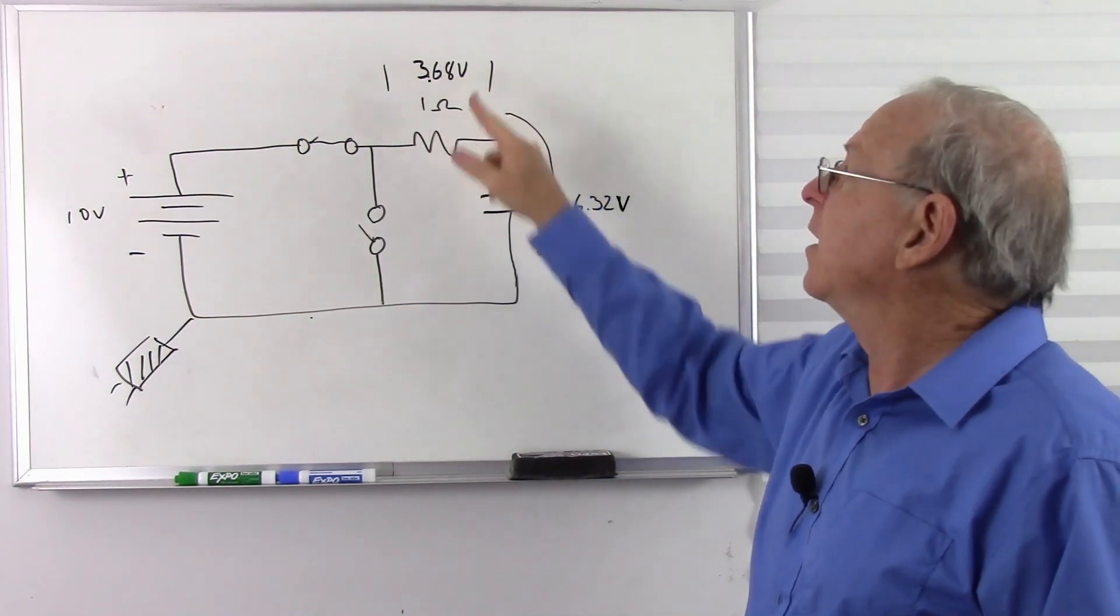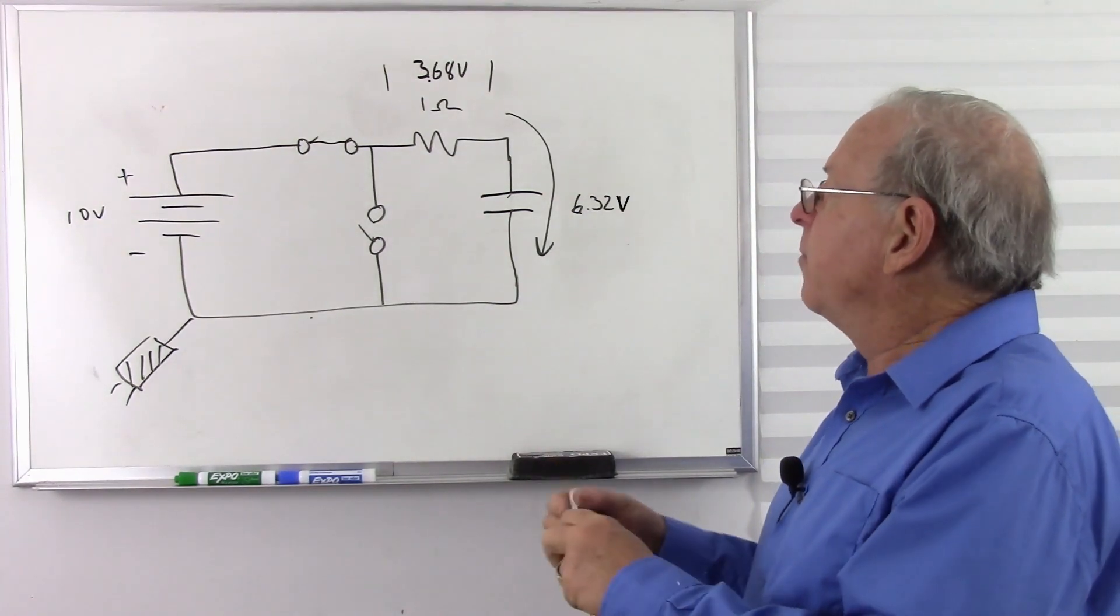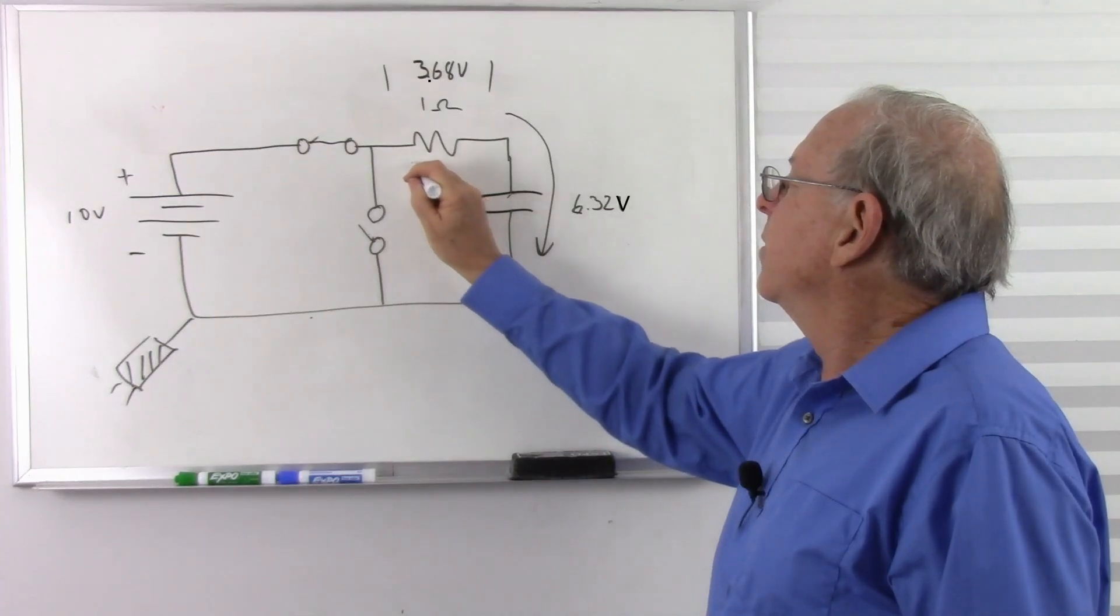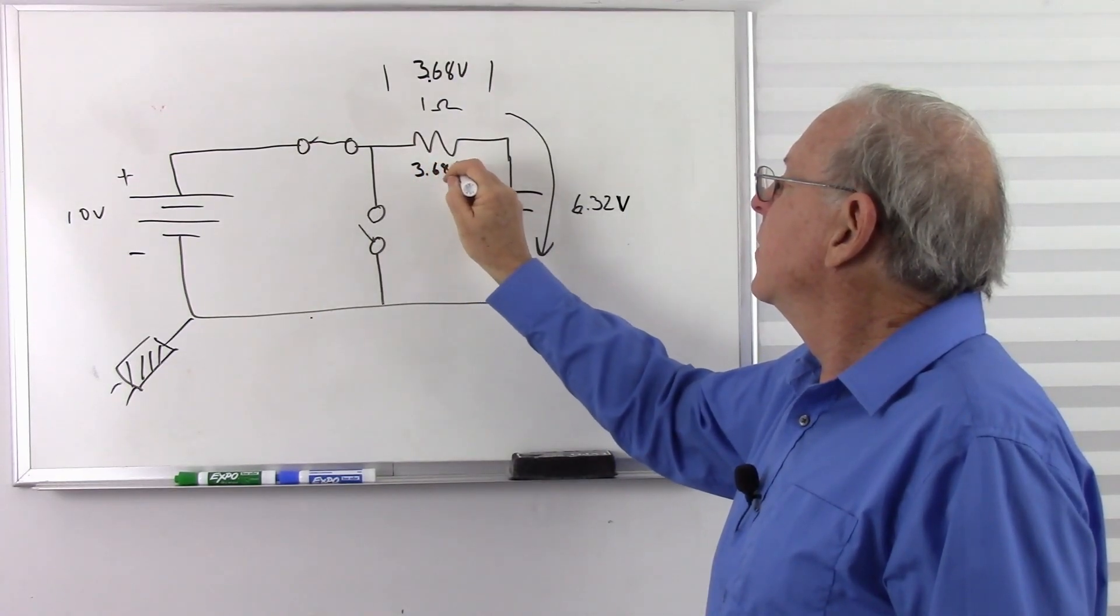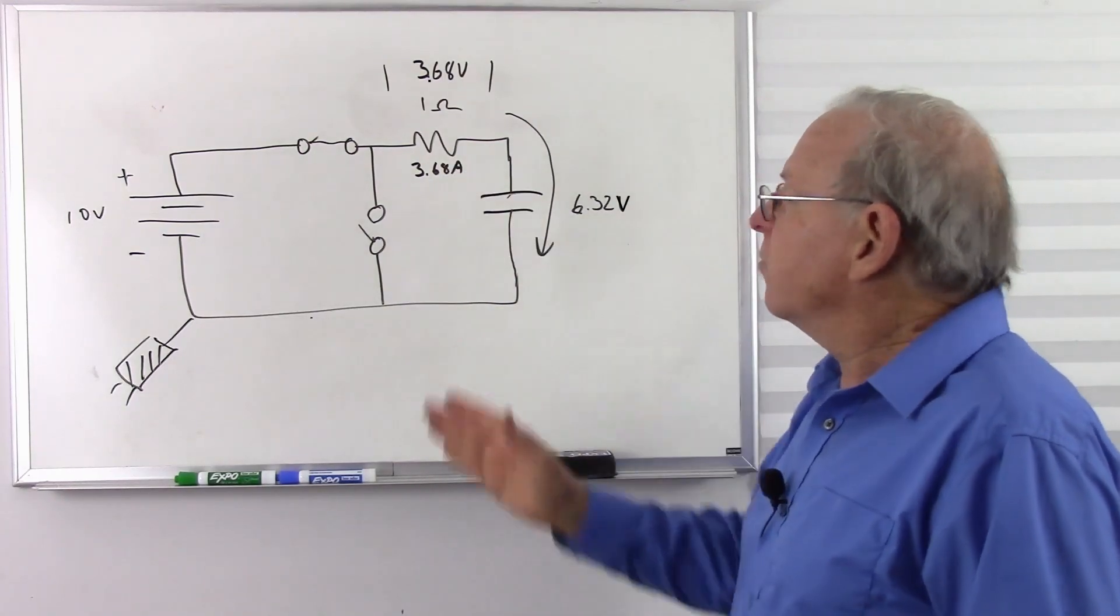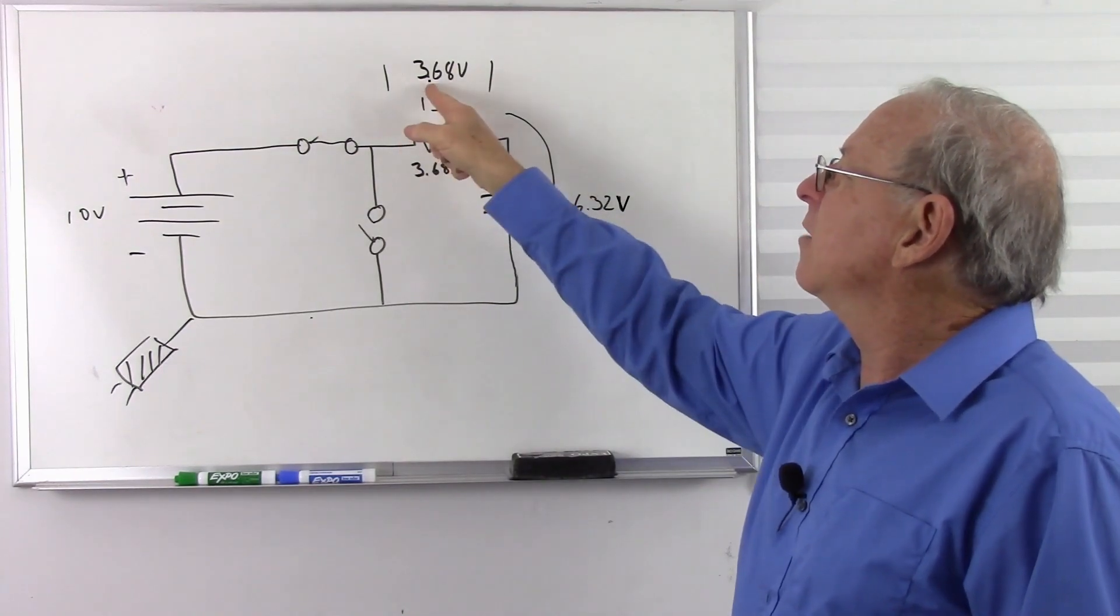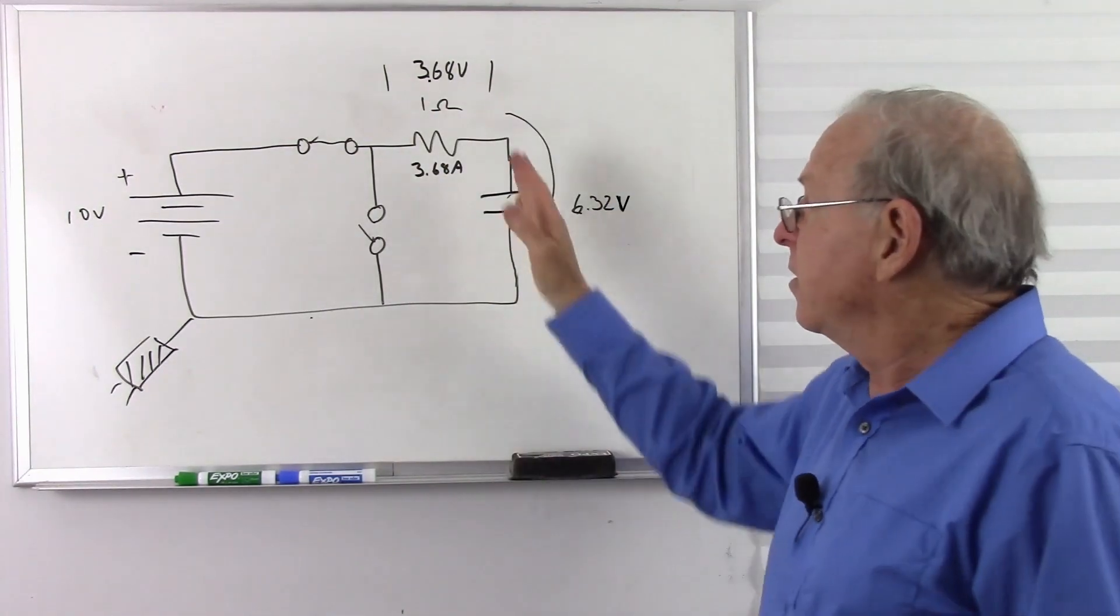Well, if you know your voltage, you divide into it. So 3.68 divided by 1 is going to equal 3.68 amps. Well, that's a lot of current, but this is just for demonstration purposes. So that's what's going on right now. 3.68 amps, 1 ohm. 1 times 3.68 gives us 3.68 volts. So now I do have voltage.